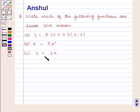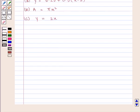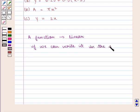We know that a function is said to be linear if we can write it in the slope-intercept form, i.e., y = mx + c.